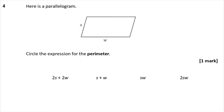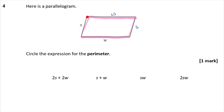Question 4: Here is a parallelogram. Circle the expression for the perimeter. The perimeter is the distance around the shape. Opposite sides of a parallelogram are equal, so walking around you get W, then S, then W again, then S again. All together the perimeter is W + S + W + S, which groups to give 2W + 2S. So it's that one.